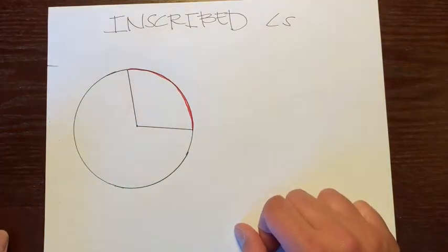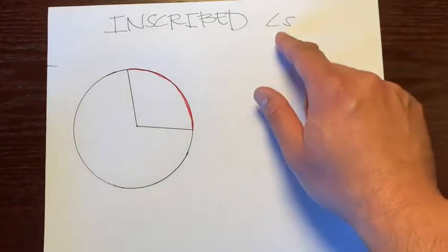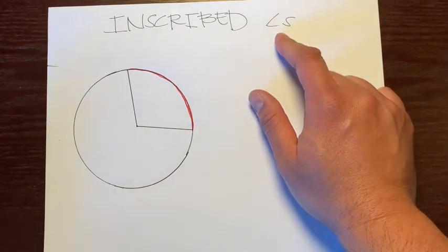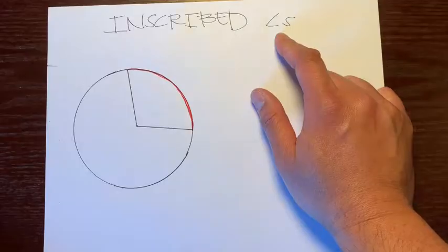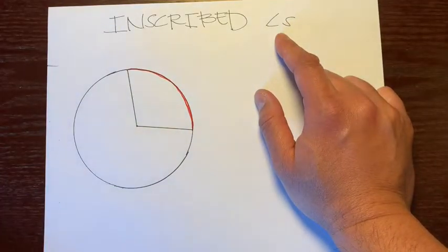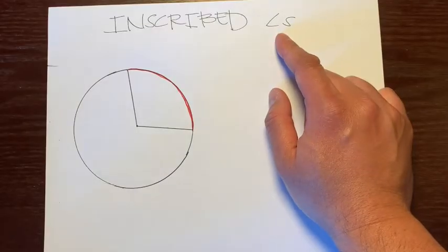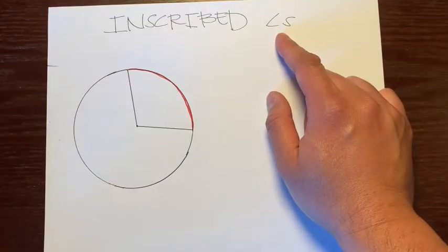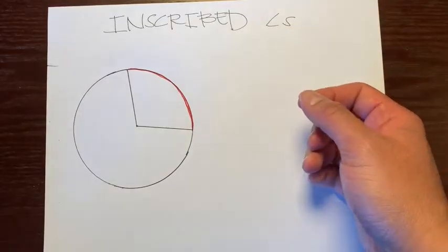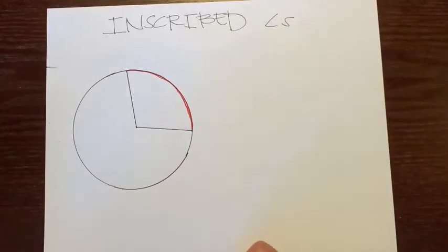Hello, this is Mr. Kinyanola, and I'm going to be teaching you about inscribed angles. Before we start, just remember we're talking about angles and angle measurements, so anytime you hear the word angle or measurement, that's going to be in degrees. If you hear the word length, that'll be in centimeters, inches, or yards — we won't be dealing with that today. So we're just talking about angles, dealing in degrees.